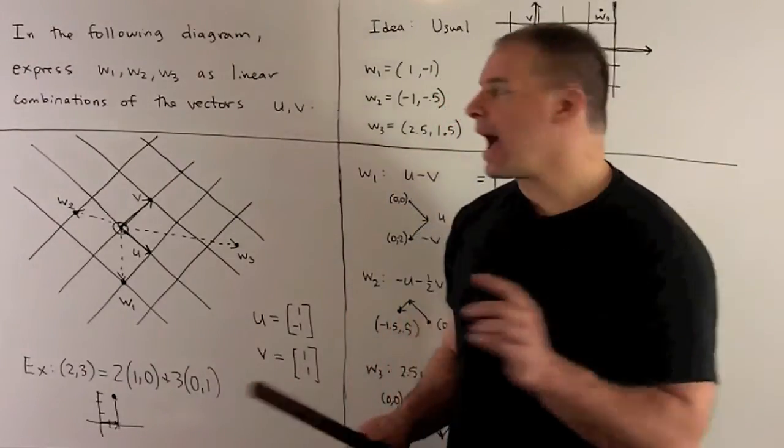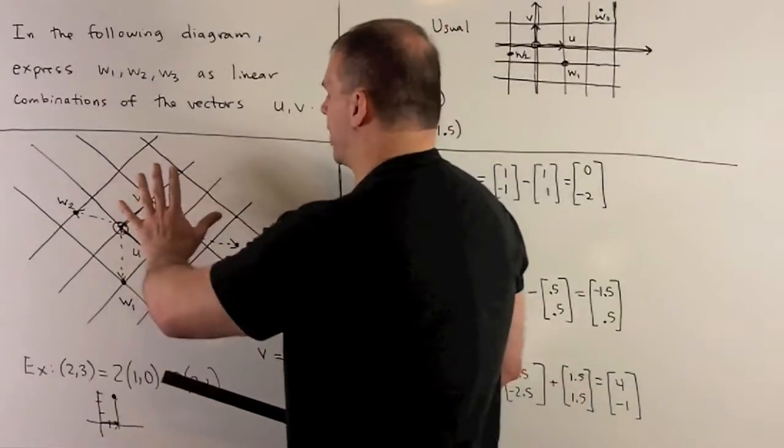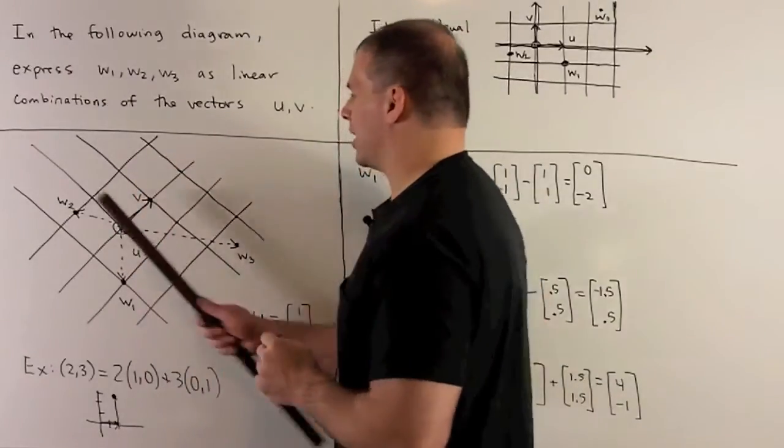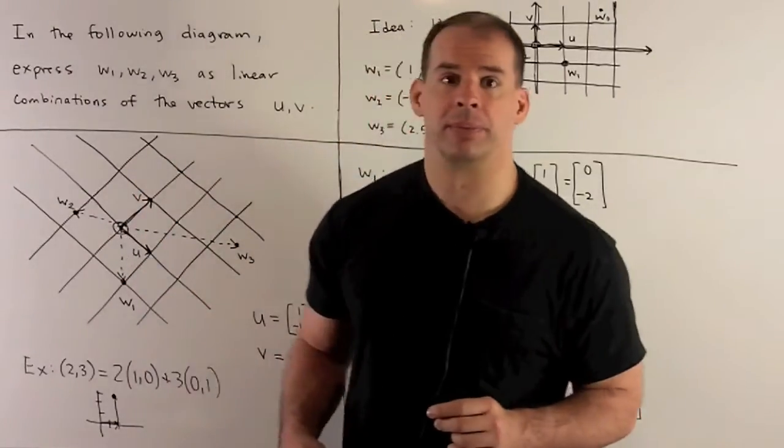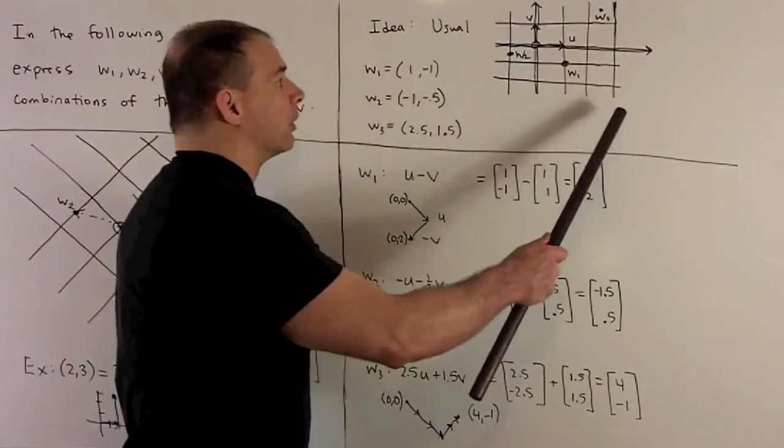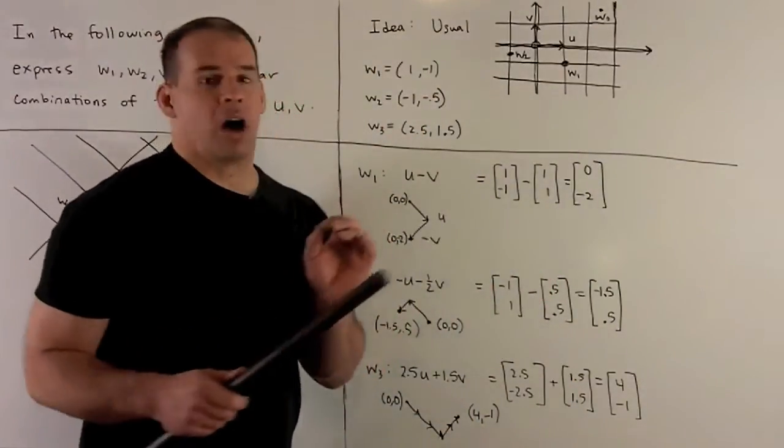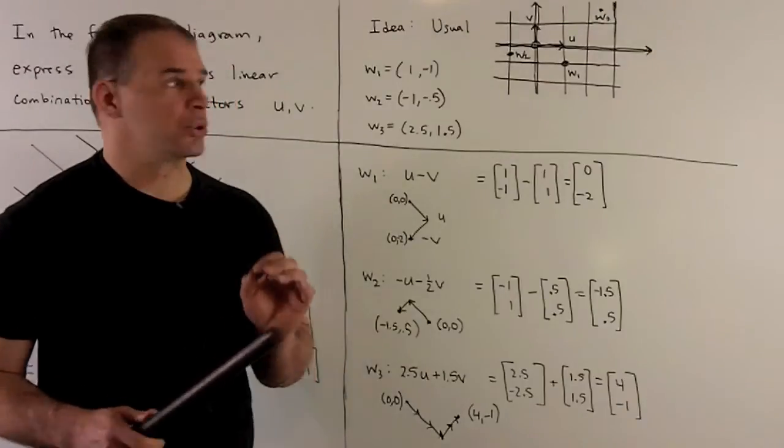Once I do that, we can just tilt our picture and we'll keep all of our points in relative position. So that puts us over here. Now, it's real easy to pick off the coordinates for our w's.